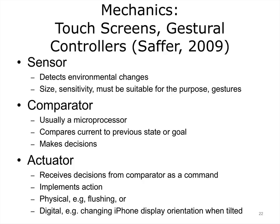After the sensor detects a stimulus, it passes information to the comparator, which is usually a microprocessor. This compares the new information to the previous state or goal and makes decisions about what is to be done. These decisions are passed to the actuator, which receives the decisions from the comparator as a command and implements an action, which may be physical such as a flushing toilet, or digital such as an iPhone display orientation when the device is tilted.